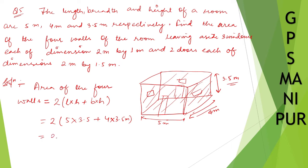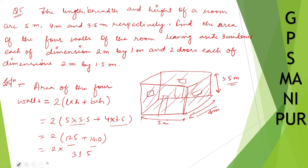Calculating: 5 × 3.5 = 17.5, and 4 × 3.5 = 14.0. Adding these: 17.5 + 14.0 = 31.5. Then 2 × 31.5 = 63.0 square meters. So the area of the four walls is 63.0 m².